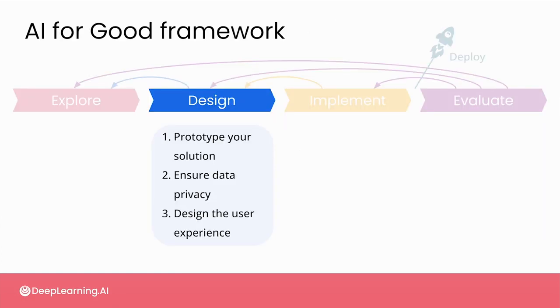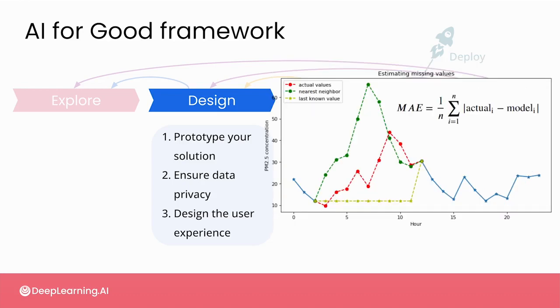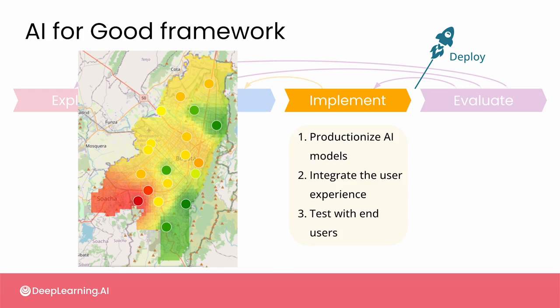In the design phase, you investigated missing data more deeply and developed models to estimate missing sensor measurements — first a simple baseline model, and then a neural network that performed much better. After using your models to estimate missing values across all the pollutants in the dataset, you developed a method for estimating pollution levels in between the sensor stations.